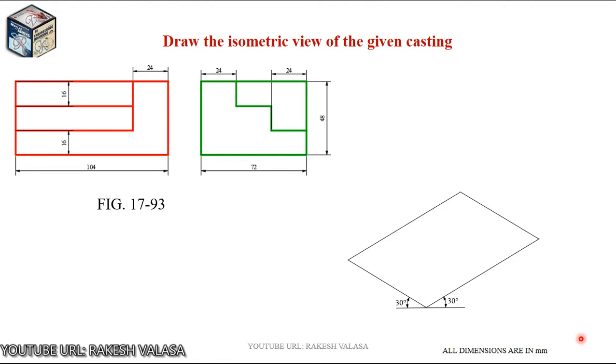This is the cuboid bottom rectangle in isometric view. We know the total height is 48 mm. So, each and every corner point we need to draw one vertical line. The line height is 48 mm. This is the cuboid. I have constructed by using three dimensions that is 104 mm length, 72 mm width, height is 48 mm.